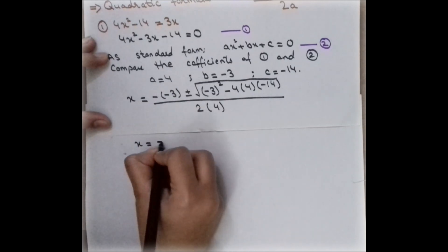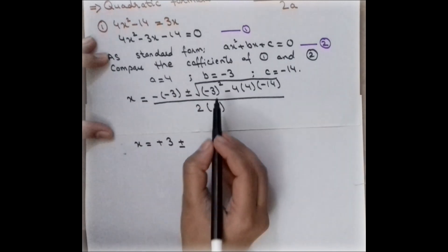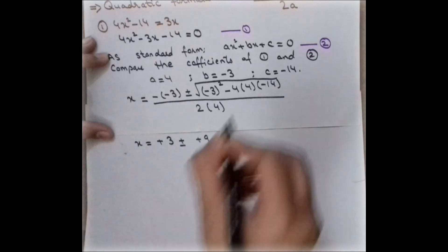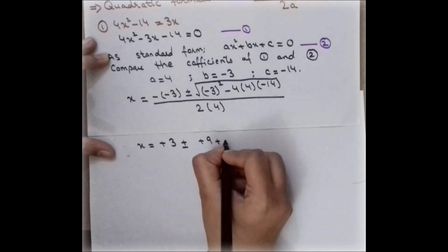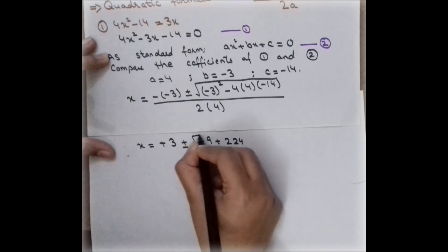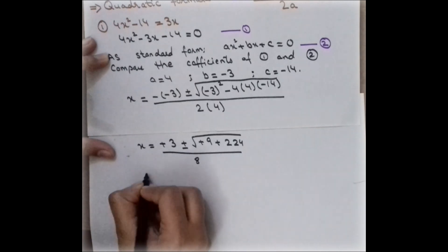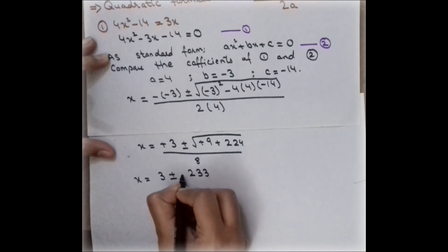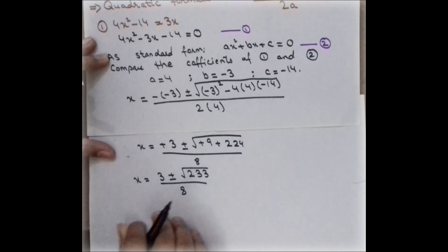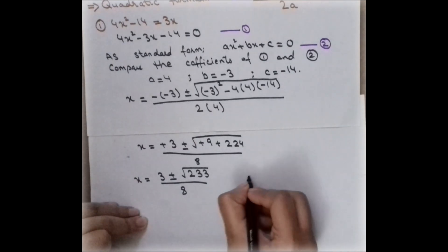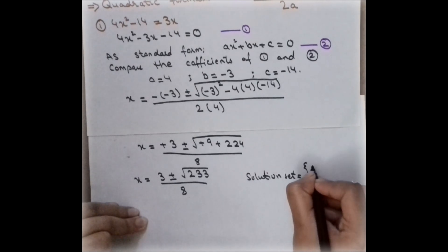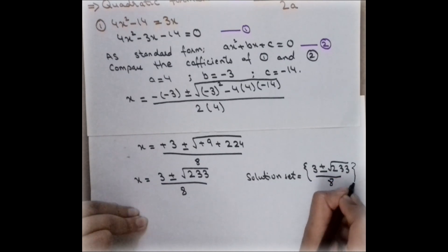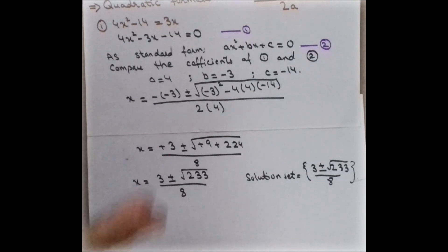Simplifying: minus of minus gives plus, so we have 3 ± √(9 + 224) / 8, which gives 3 ± √233 / 8. So the solution set of this question is (3 ± √233) / 8. It is a very easy method if you understand it properly.